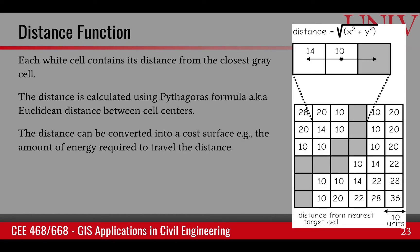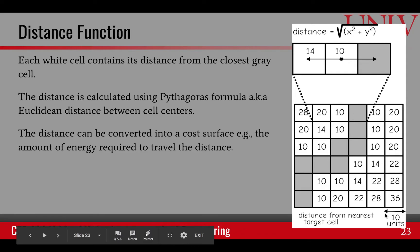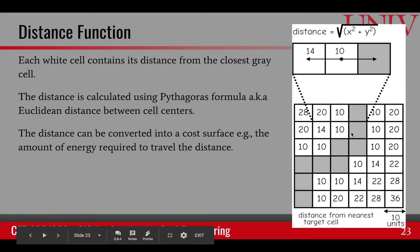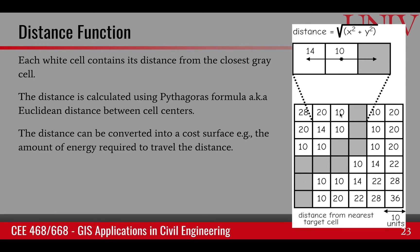Distance is calculated using the Pythagorean formula, also called Euclidean distance. If we look at this raster image where the cell size is 10, we compute from the center of one cell to another. These gray cells are the cells from where we are trying to find distance. If we look at this cell, the closest gray cell has a distance between centers of 10 or 20.